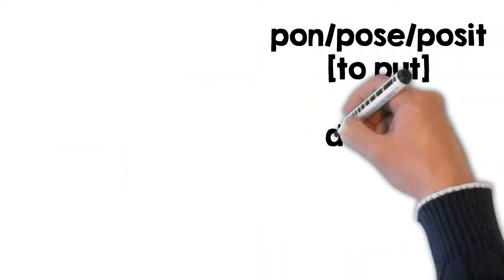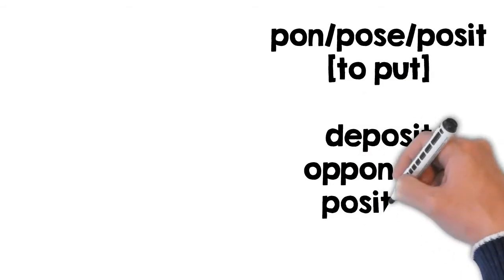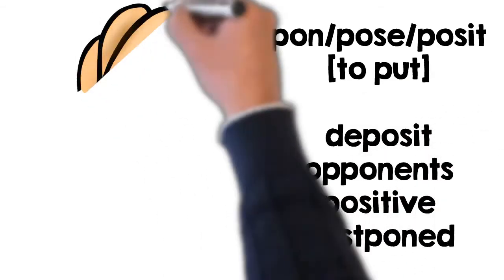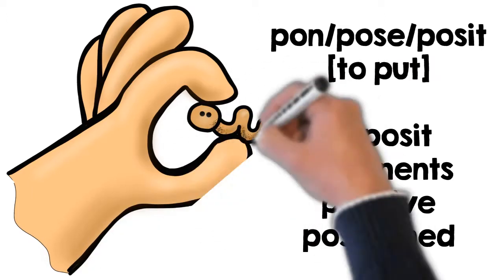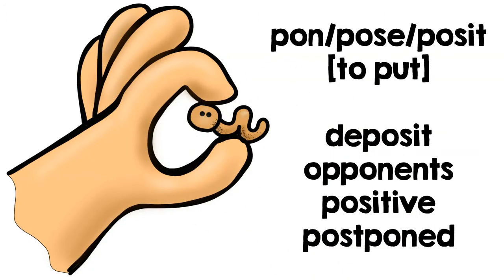The root word pon, pos, and posit means to put. Some words containing this root include deposit, opponent, positive, and postpone.